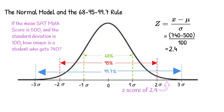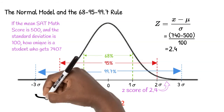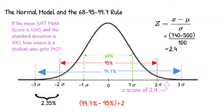We look for the z-score of 2.4 on the x-axis. 99.7% of values are within three standard deviations of the mean, and 95% of values are within two standard deviations of the mean. If we subtract these percents, we get the percent of values between two and three standard deviations from the mean. But half of these values are below the mean and half are above the mean. We divide by two and find that 2.35% of values are between two and three standard deviations above the mean. This tells us that a student who gets a score of 740 is unique, as only 2.35% of students fall in that range.